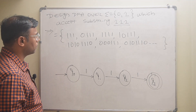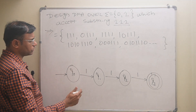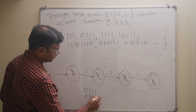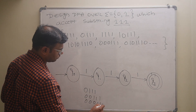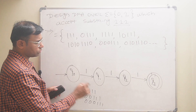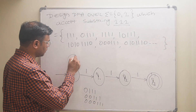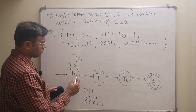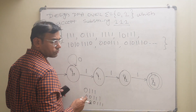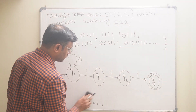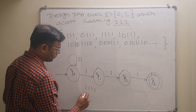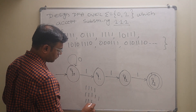Next, for strings like 0111, 00111, 000111, there can be any number of zeros before 111. If we apply a self-loop of zero on q0, it will satisfy this condition — accepting 0111, 00111, 000111, and so on.